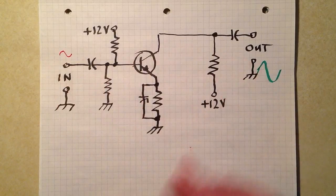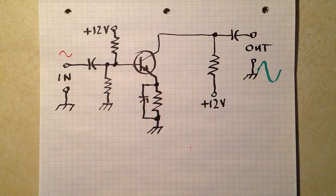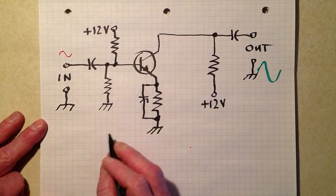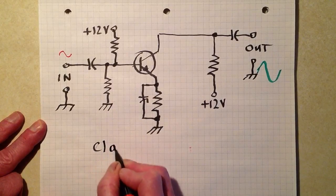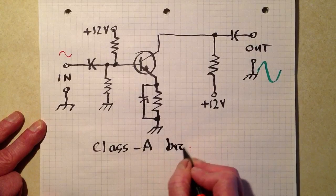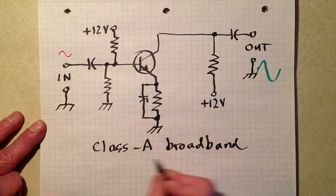So this is a voltage amplifier, even though the transistor itself is a current valve of sorts. So this is a Class A broadband amplifier.